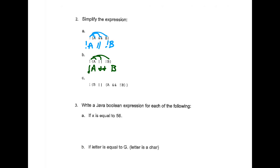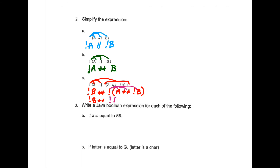For the last one, apply De Morgan's in order. First demorgan the inner expression: NOT B AND — wait, the opposite of OR is AND — then NOT(NOT A AND NOT B). Now apply De Morgan's again to that inner NOT: the opposite of NOT A is A, the opposite of AND is OR, the opposite of NOT B is B. Final simplified answer: NOT B AND (A OR B).